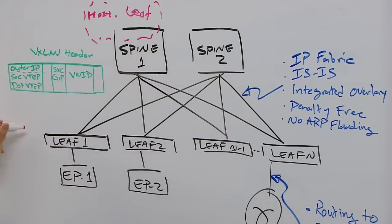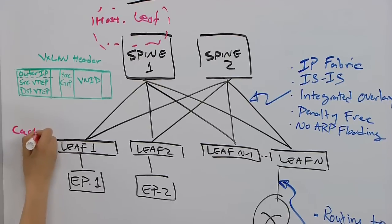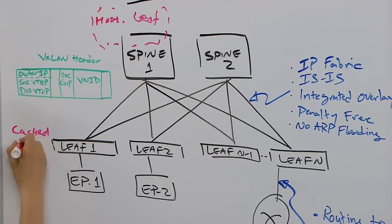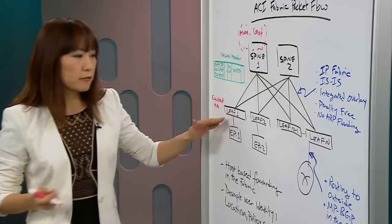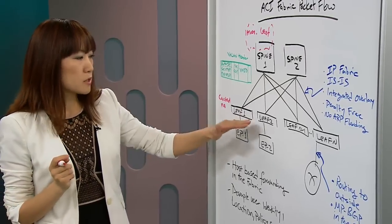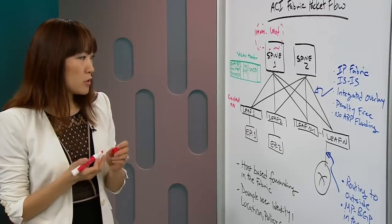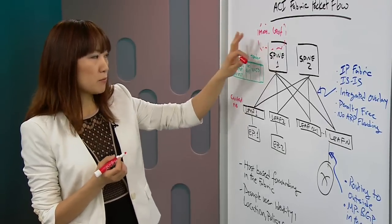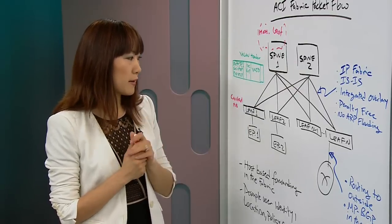And on every leaf, we have cached forwarding information. Every leaf only needs to know the host which they need to send traffic to or which they need to talk to. This is a subset of the complete host table which is stored on SPINE.